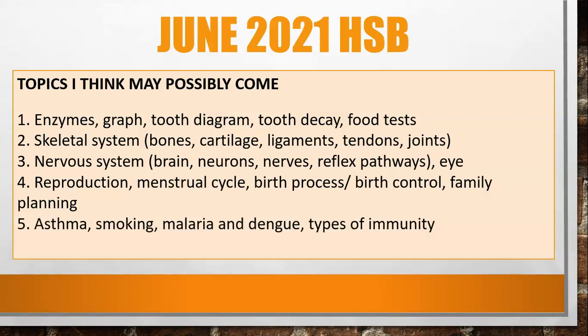Then asthma, smoking, malaria, and dengue — going into the diseases topics. They definitely will bring something on diseases from section D and E. I believe they always try to put in questions from across the different sections of the syllabus. I'm thinking asthma, smoking, malaria, and dengue, which I haven't seen in a while. And then types of immunity, possibly something to do with vaccines — they may even talk about COVID, a trending topic.